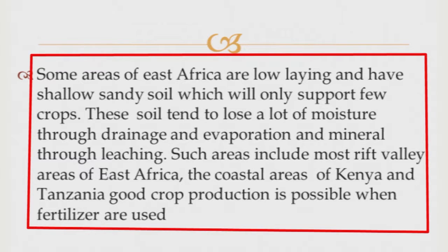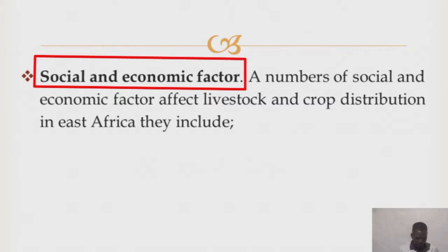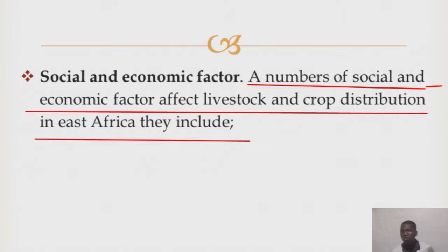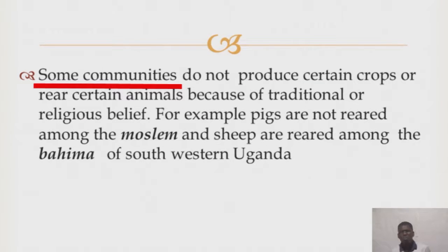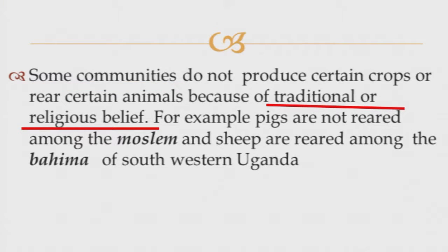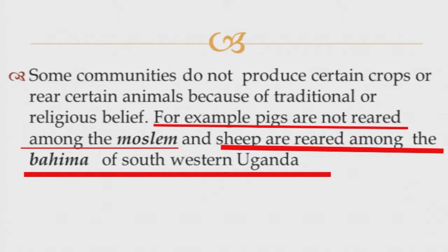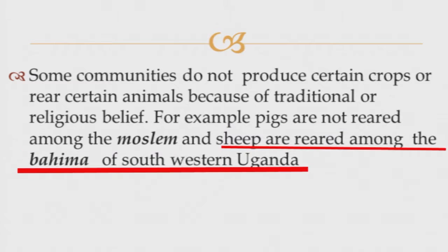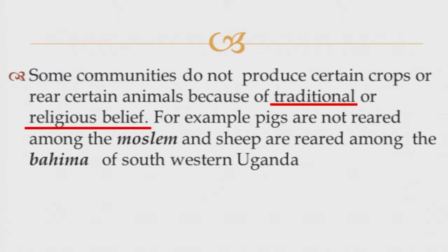There are also social and economic factors that affect the distribution of livestock and crops in East Africa. You find that some communities do not produce certain crops or rear some animals based on traditional and religious beliefs. For example, Muslims do not keep pigs based on their religious beliefs. In most Bahima communities of Northwestern Uganda, they rear sheep in large herds because of traditional beliefs.